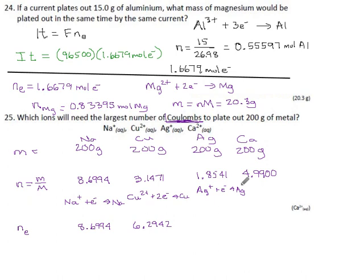For silver, well silver's got a single charge just like sodium did, so however much silver you're making, exactly the same number of electrons: 1.8541. And for calcium, its charges are +2 on the ions, so you need two electrons per ion. So however much calcium you're producing, you'll need twice that many electrons. So 4.99 times two is 9.98 moles of electrons. So which one will require the most? The calcium will. Runner-up is sodium, copper is second last, and silver will require the least.